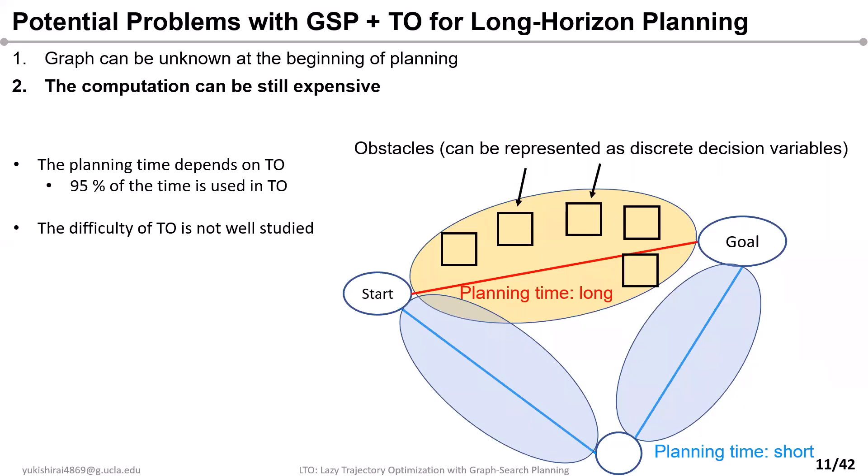In this example, the graph search planner finds the optimal trajectory shown as the red trajectory. However, recognizing that the computational complexity of trajectory optimization is exponential to the number of discrete decision variables, the actual computation time with the red trajectory takes more time than the blue trajectory. So sometimes, even though the blue path is longer in terms of length, the planner wants to choose the blue path since the computation is cheaper. To make decisions like this based on computational cost, we need to define the edge cost that considers the computational complexity of trajectory optimization.